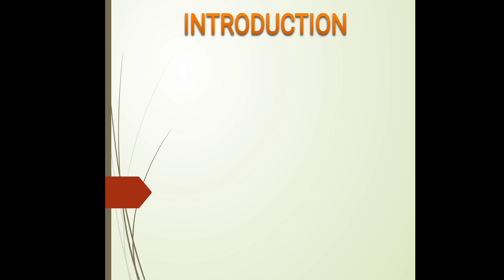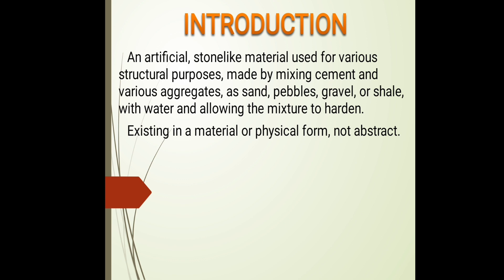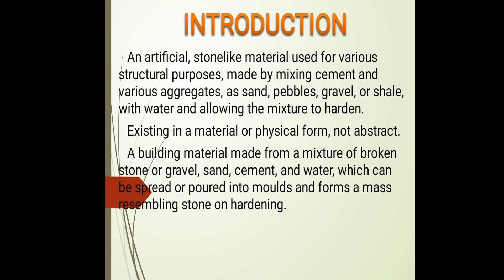Now we are entering into the introduction topic. First, what is meant by concrete? In general terms, it is an artificial stone-like material - a hardened material formed with different kinds of materials like cement, aggregates, sand, pebbles, or gravel. It is not a powder form but a hardened rock-like formation. From a civil engineering view, it is a building material made of a mixture of broken stone or gravel, sand, cement, and water.